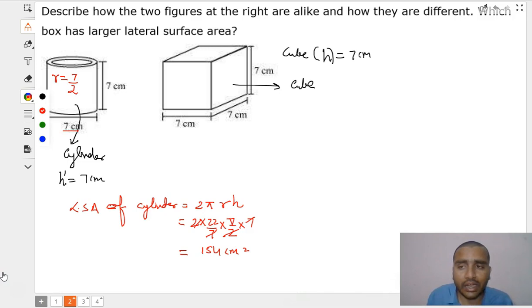Now, let us find what is the lateral surface area of cube. So we can say LSA stands for lateral surface area of cube. That is going to be equal to 4 times the A square or 4 times the side square. So, 4 times what is the side of that? That is 7.